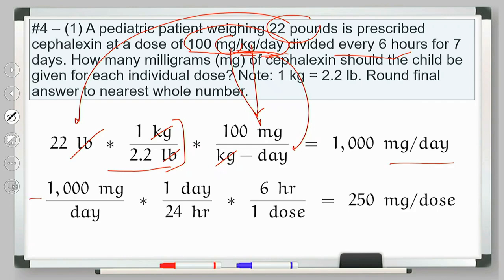Starting from milligrams per day, I want milligrams per dose, not per day. If something's dosed once a day, there are 24 hours between doses. Twice a day: 12 hours. Three times a day: 8 hours. Four times a day: 6 hours. If it's given every six hours, how many doses per day? Four doses. So we just take the daily dose and divide by four. With dimensional analysis: it's the daily dose in milligrams per day, times 1 day per 24 hours, times 6 hours per dose — giving milligrams per dose. You can skip steps if it's intuitive, but dimensional analysis shows you exactly how to get there.